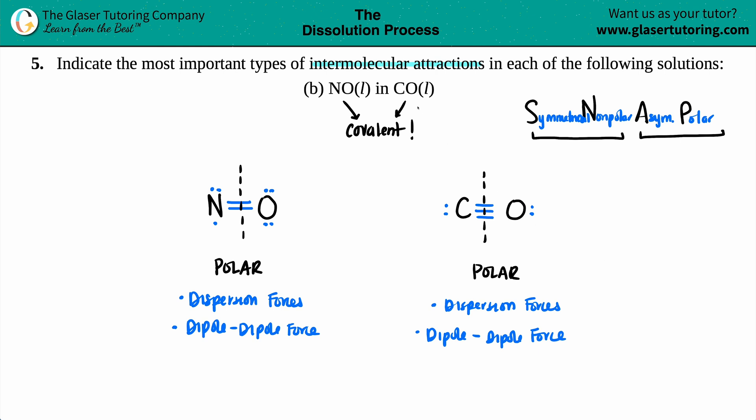Now, in order to find out the most important type, you will always pick the most attraction. That's why you always like to list them from least force to the most force, because you just pick the one that they have in common—the most, or the highest one.